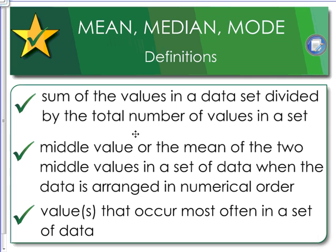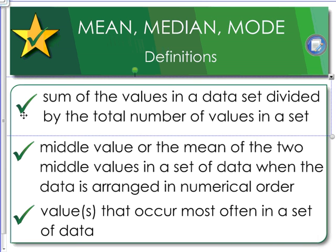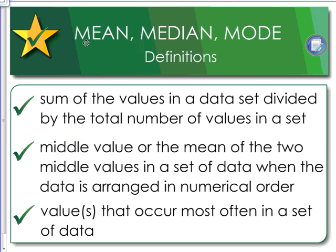The mean is the sum of values in a data set divided by the total number of values in a data set. The median is the middle value or the mean of the two middle values in a set of data when the data is arranged in numerical order.